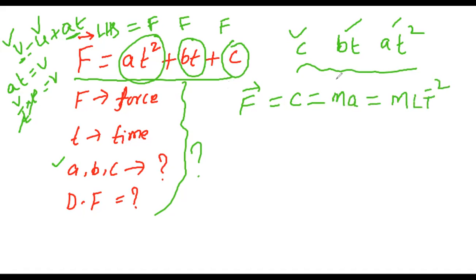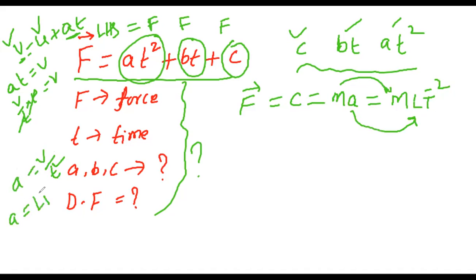Acceleration is velocity divided by time. Velocity is LT⁻¹, divided by T gives LT⁻². So F = MA, and you know the dimensional formula. Now, what is the dimensional formula for C?